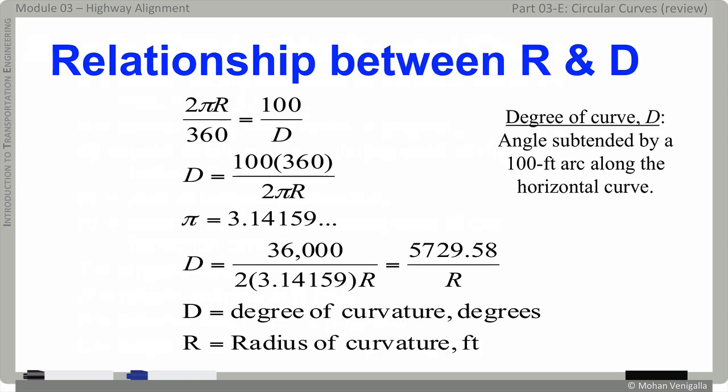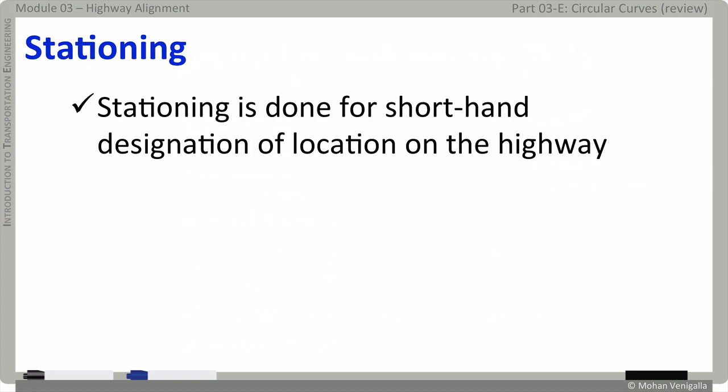Here is the relationship between R and D and this formula at least the formula for D is very important and you will see in quite a few problems on horizontal alignment and I'm not going to read it for you just keep in mind this is an important formula. Stationing station is nothing but shorthand designation of location on the highway.